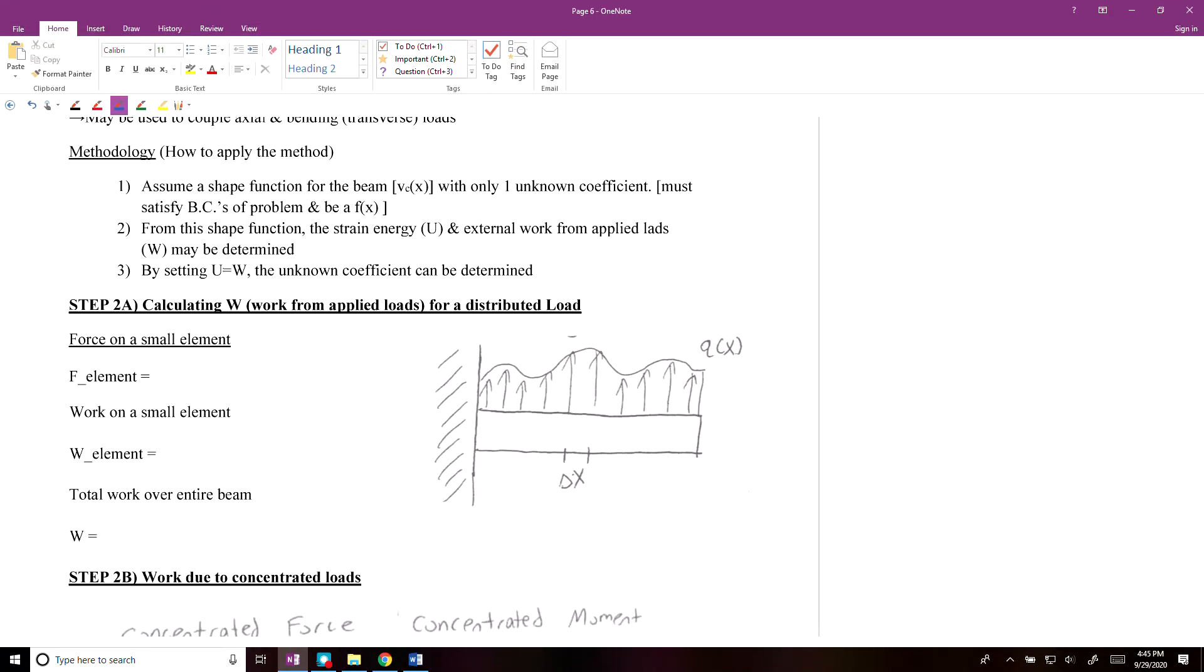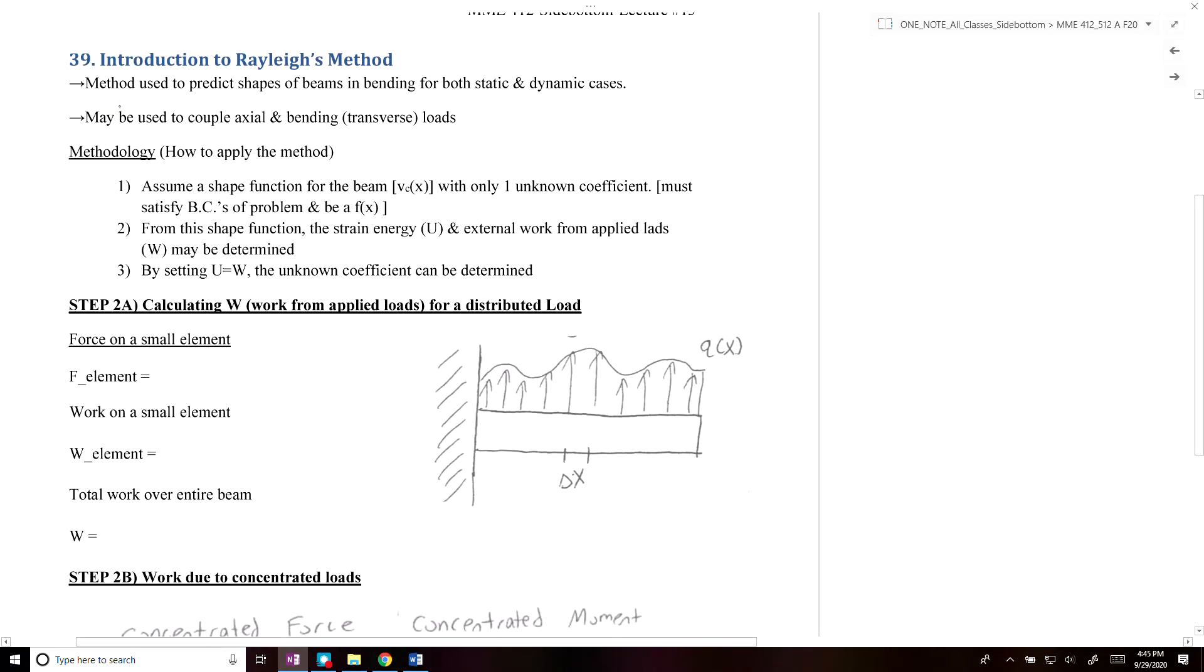In this video we're going to talk about Rayleigh's method, which is a type of energy method that you can use to predict the shape of beams in bending for static and dynamic cases. It can also be used to apply coupled axial and bending loads, but we're going to focus on the first application.